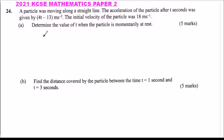Question number 24. We are told a particle was moving along a straight line. The acceleration of the particle after t seconds was given by 40 minus 13t meters per second squared. The initial velocity of the particle was 18 meters per second. Determine the value of t when the particle is momentarily at rest.